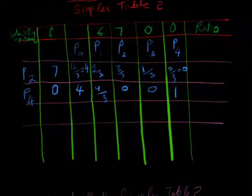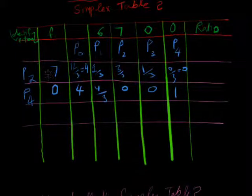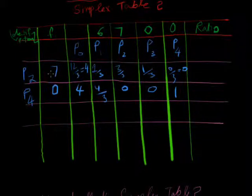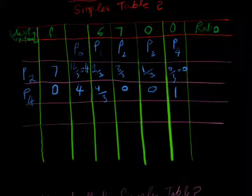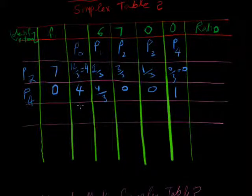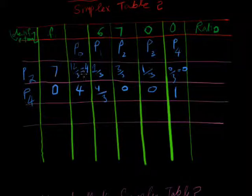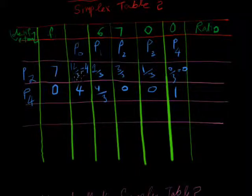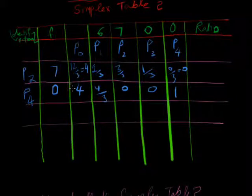Now we multiply this 7 with 4 and plus 0 multiply with 4, and we will add it. 7 multiply with 4 is 28, and 0 multiply with 4 plus 0 is 28.